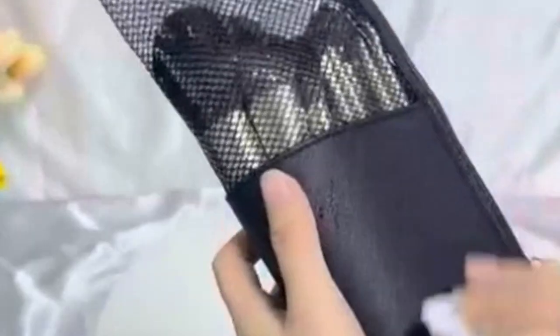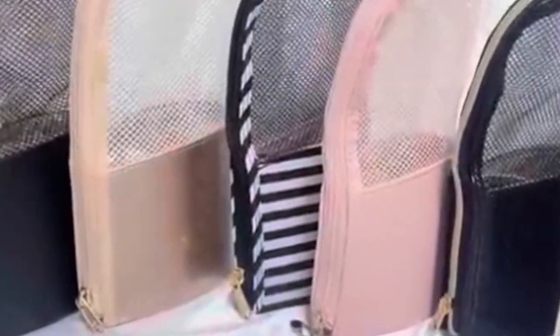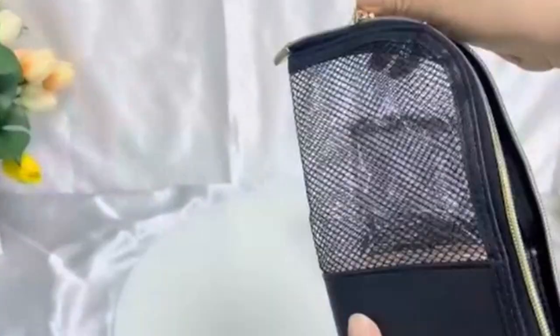Beyond makeup brushes, the Monstina case can also be used as a cosmetics bag or storage bag. It can hold various small items, making it a versatile accessory for organizing your belongings. The Monstina case is a functional and practical solution that eliminates the need for separate makeup brush cases and holders.